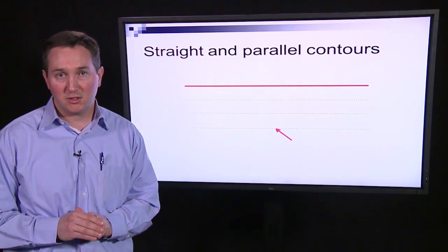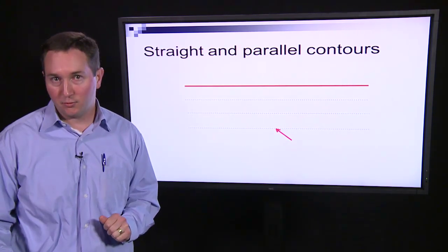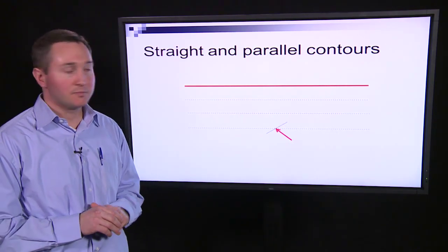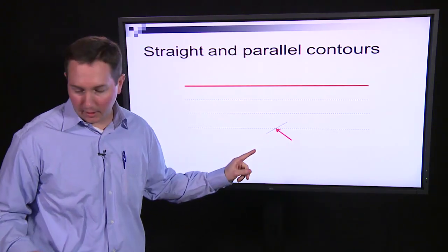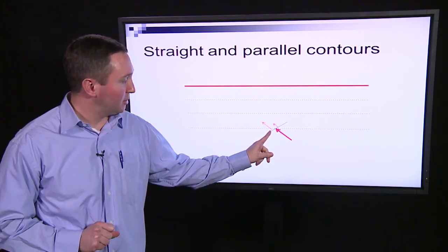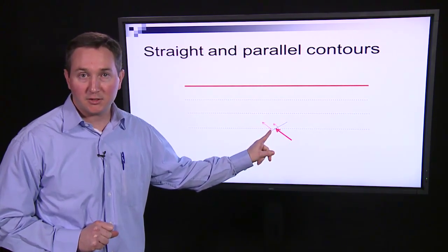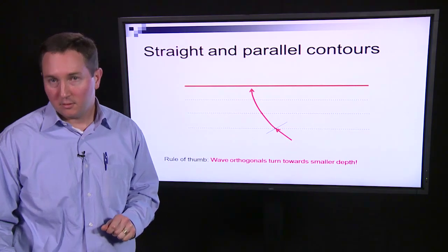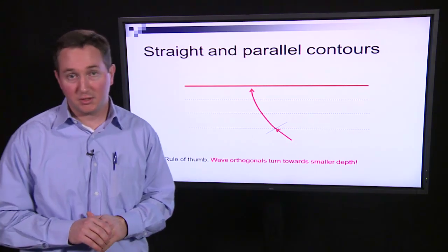For example, if we just consider a little section of wave, knowing that the wave speed increases with water depth, we can qualitatively predict that this section will travel faster than this section. Therefore this wave will tend to take this path and become oriented essentially in line with the coast. That is, it turns towards smaller depths.